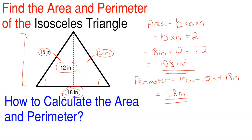And that's how you find the area and perimeter for an isosceles triangle. Keep in mind that an isosceles triangle is a triangle that has two equal sides, typically denoted by these little tick marks.